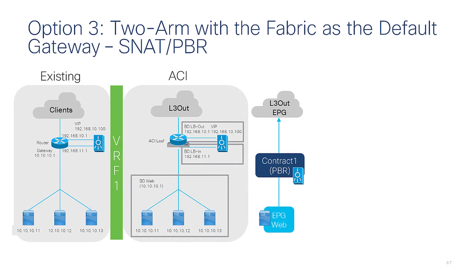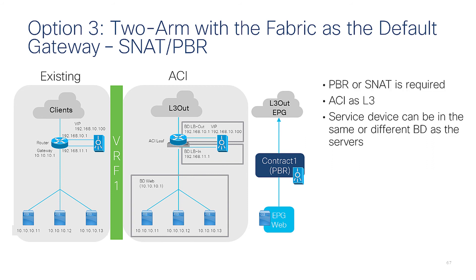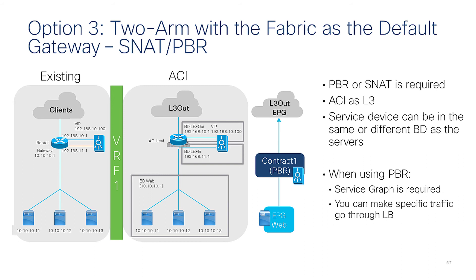Option three is the two-arm design with the fabric as the default gateway, leveraging source NAT. Here we have two different BDs: one for the load balancer in/out and one for the servers. You need to use source NAT or policy-based redirect. ACI as the layer three device provides routing for the traffic, and the service device can be in the same BD or a different BD compared to the servers. When using policy-based redirect, a service graph is required, and you can also specify only certain ports that need to go to the load balancer.